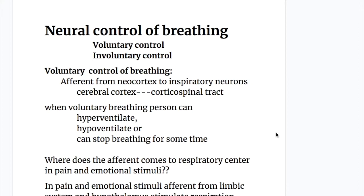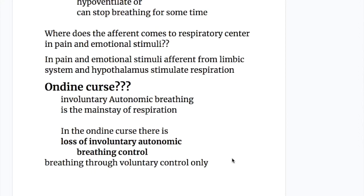Voluntary control of breathing involves efferents from the neocortex to the inspiratory neuron, from the cerebral cortex via the corticospinal tract. When voluntarily breathing, a person can hyperventilate, hypoventilate, or stop breathing for some time. Afferents to the respiratory center also come from pain and emotional stimuli — specifically from the limbic system and hypothalamus, which stimulate respiration.